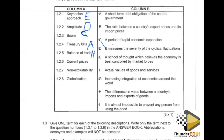For 1.2.6, we have current prices. Current prices refer to the actual values of goods and services — the actual, current values. Our appropriate answer is F.